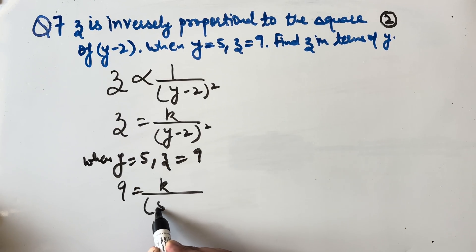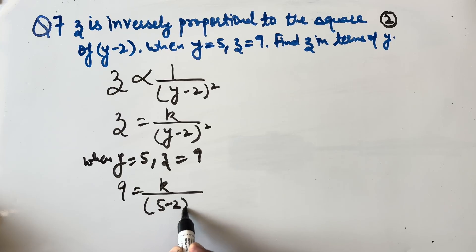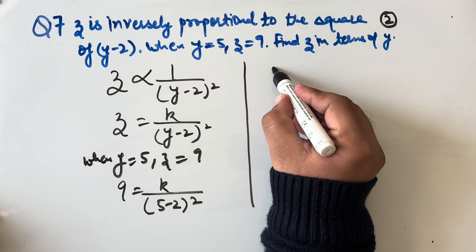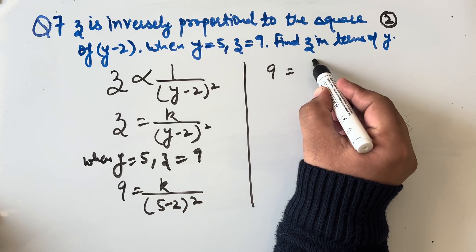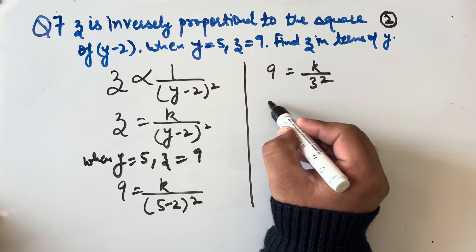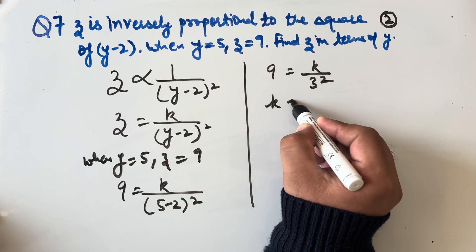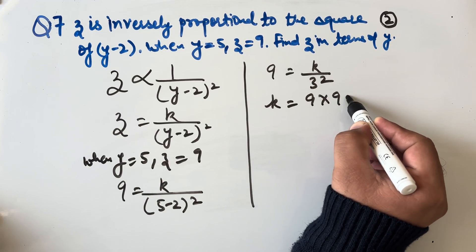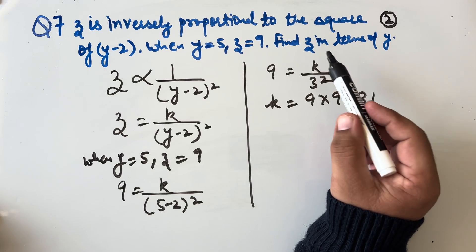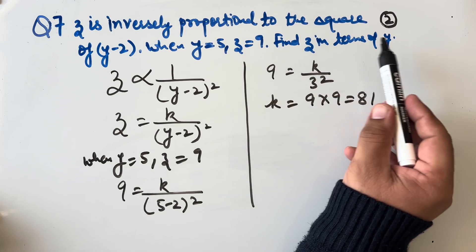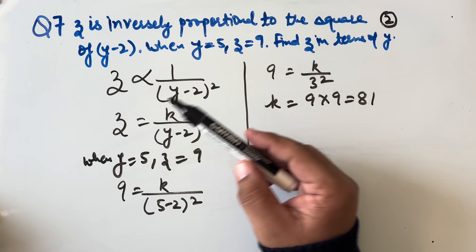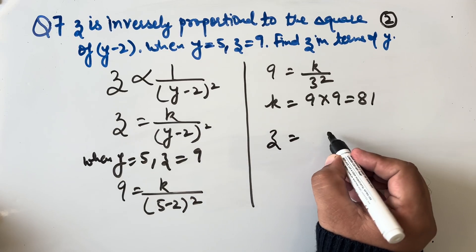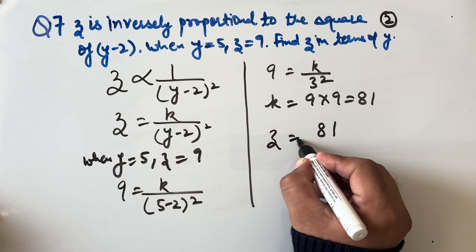Substituting: 9 = k/(5 − 2)² = k/3² = k/9. Therefore k = 9 × 9 = 81. So z in terms of y is z = 81/(y − 2)². This is our answer.